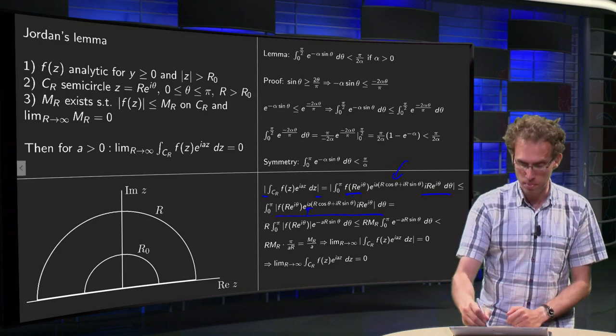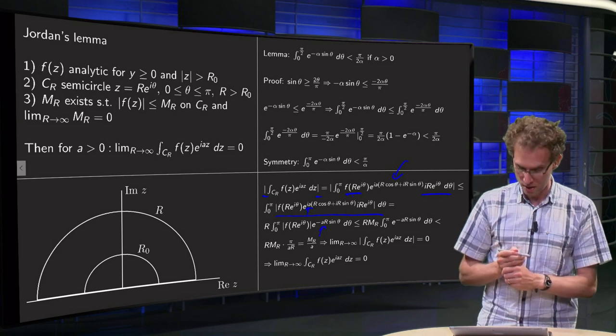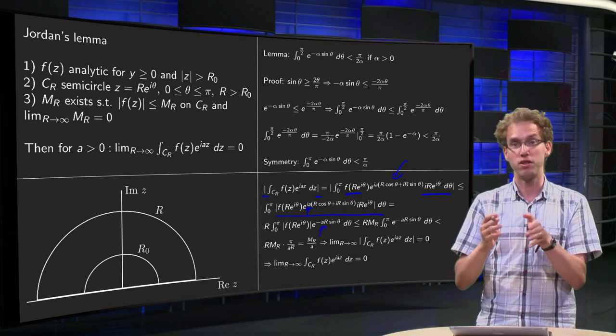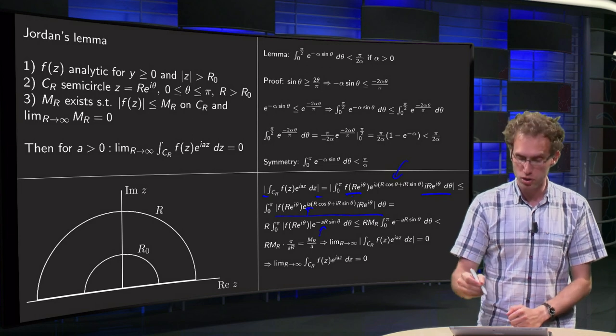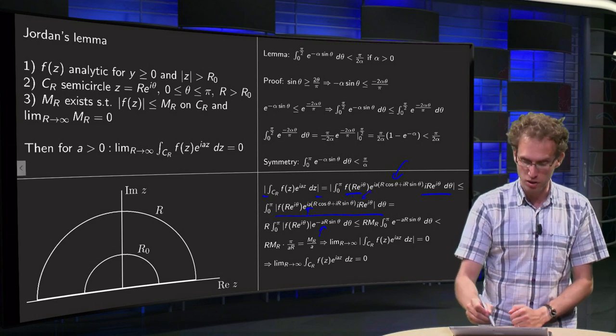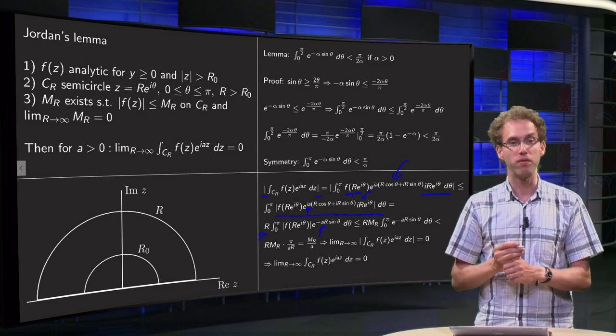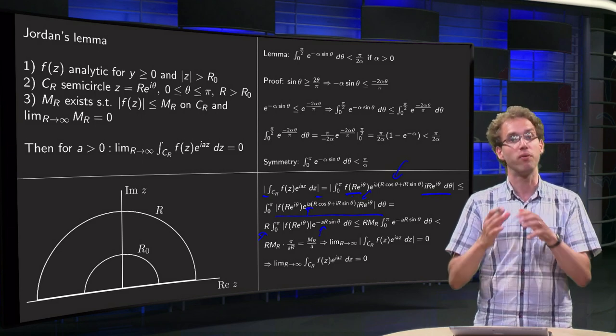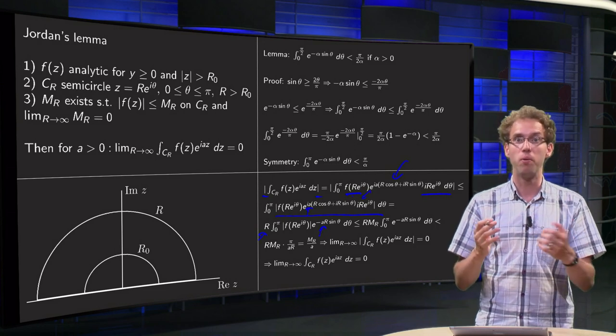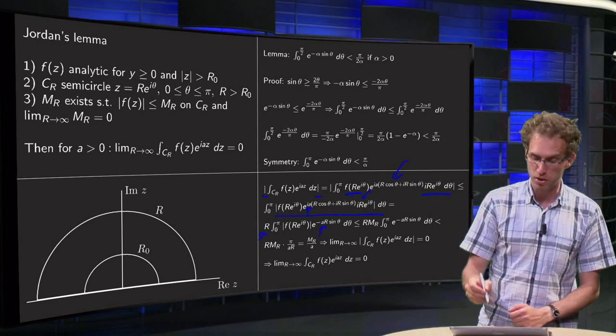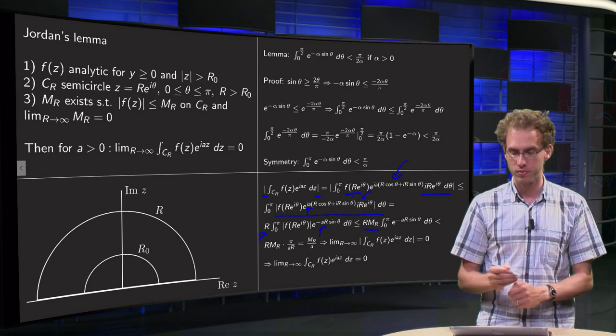And then we have the norm of e to the power i times aR cos θ, which is one. The norm of i equals one, the norm of e to the power iθ equals one, the norm of R equals R, so that can be taken outside. So we have cleaned up a lot of the mess.